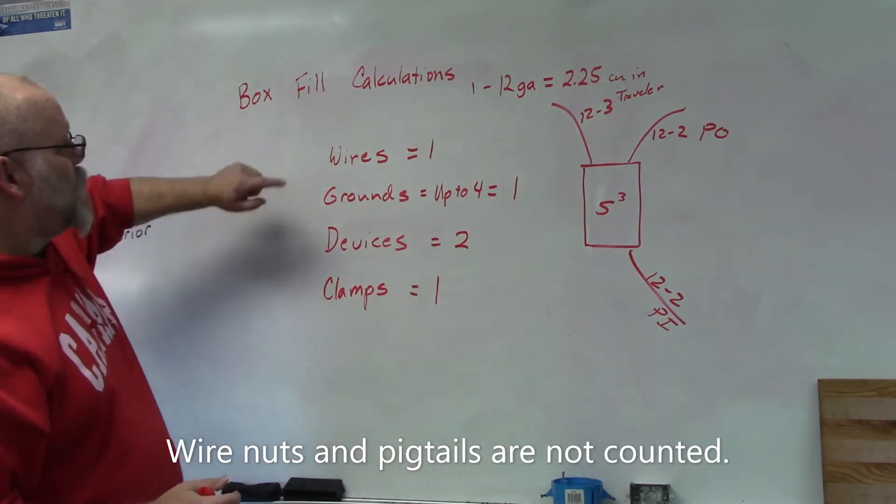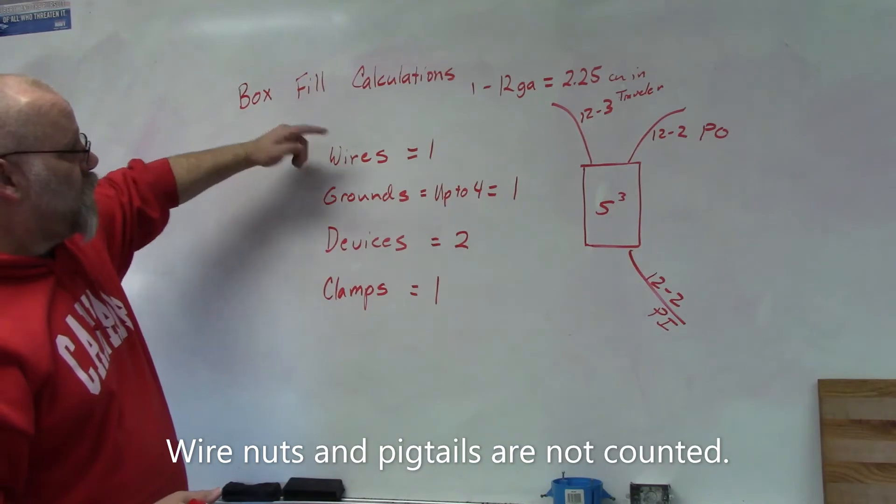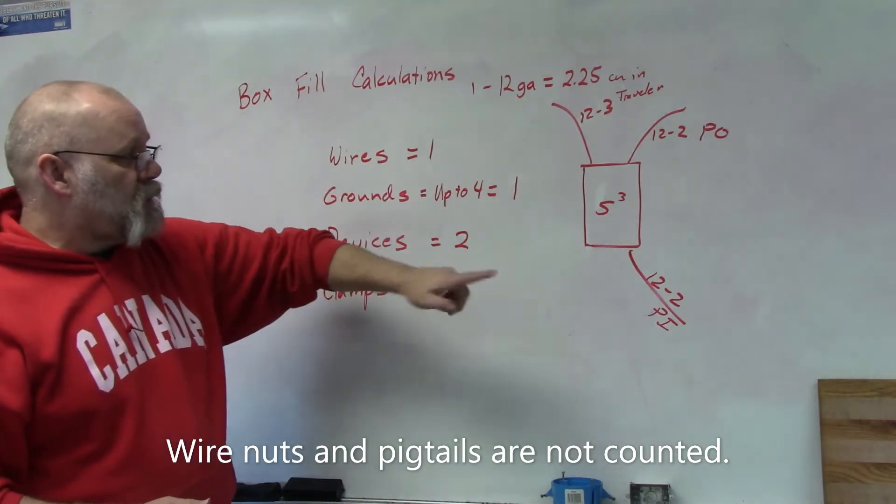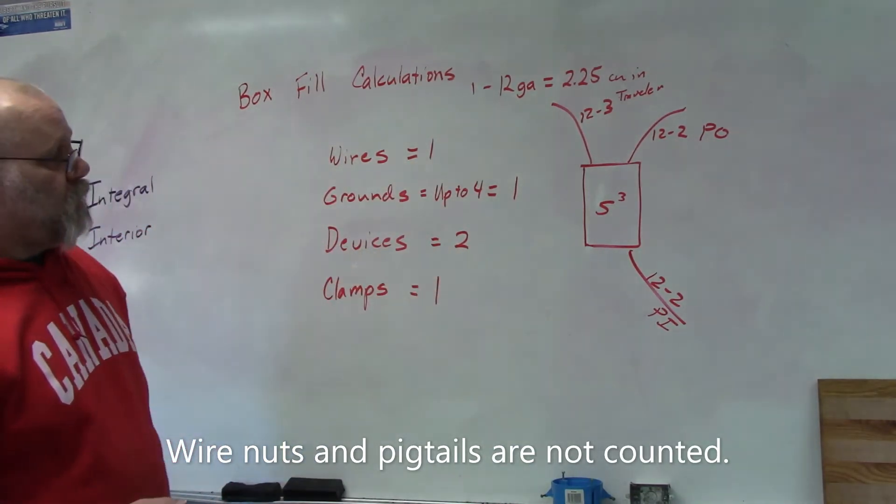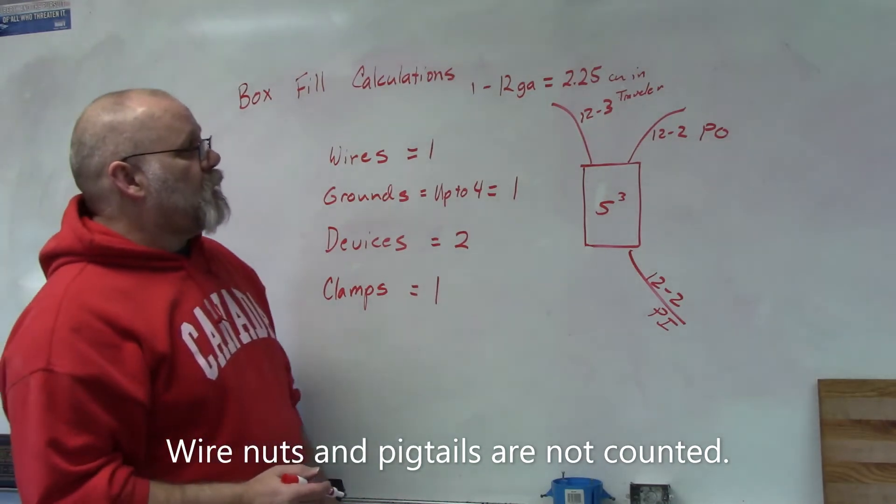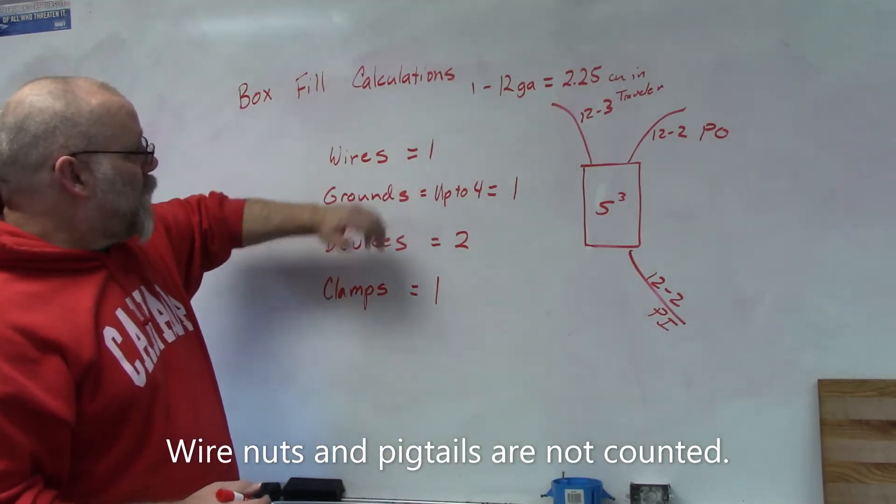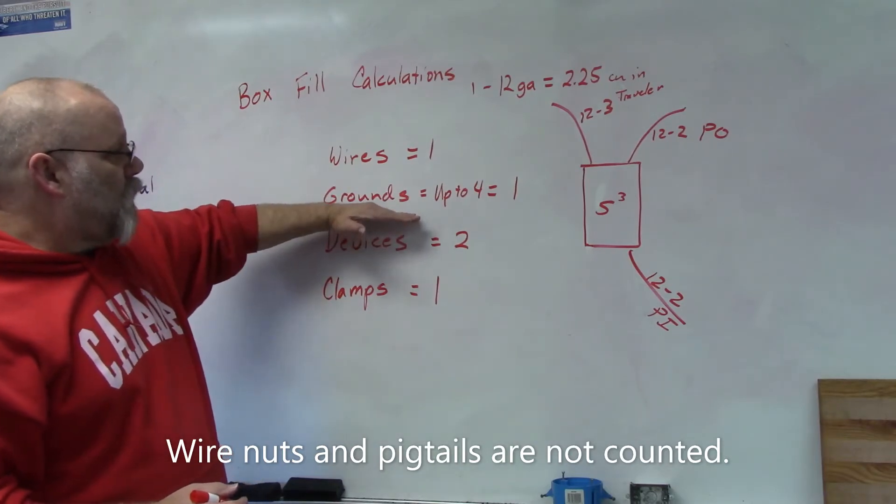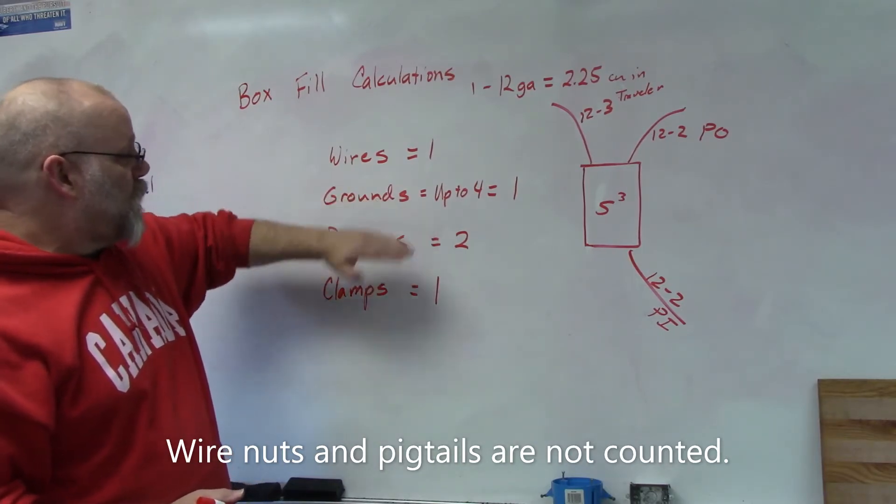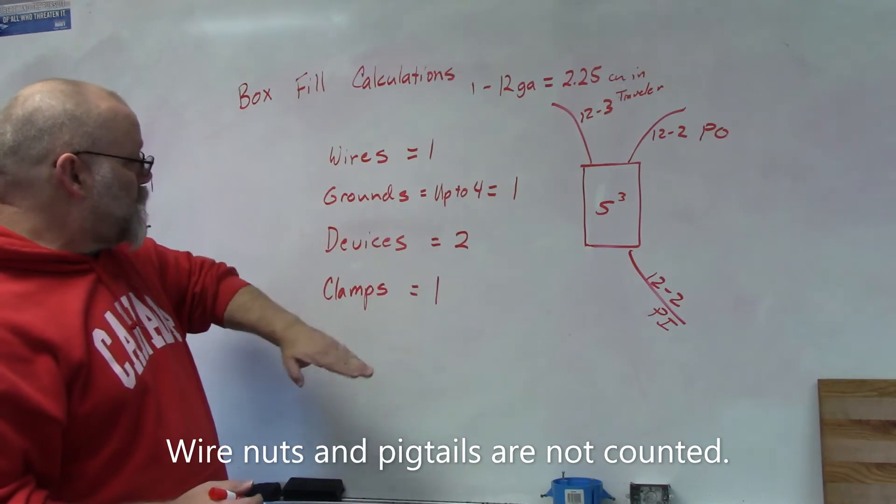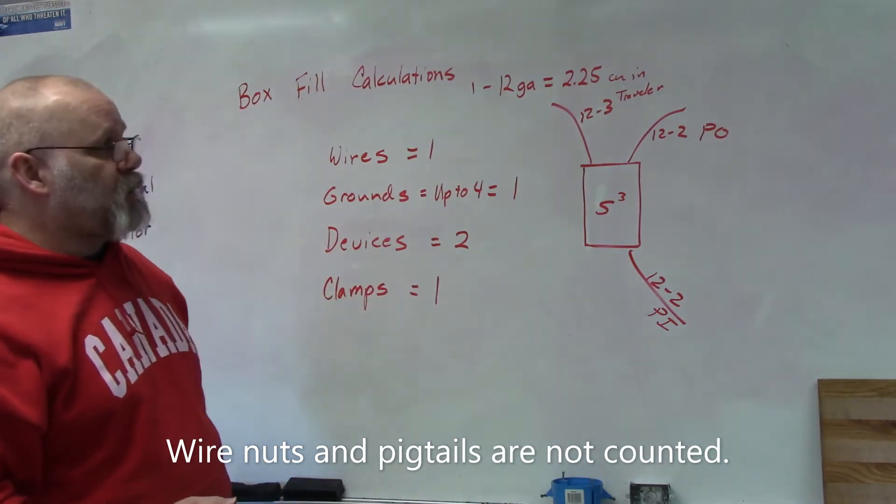So what we can do is either method. We can use the number method or we can use the cubic inch method. So the number method is you count one for each of your wires, you get one for up to four grounds, you get two for the device and one if it has any type of internal clamps.